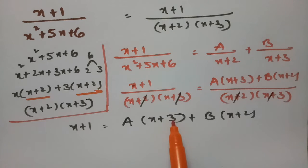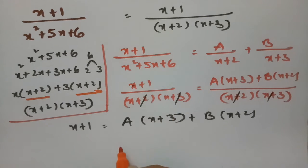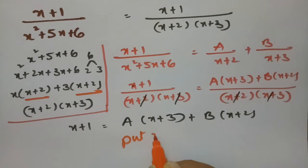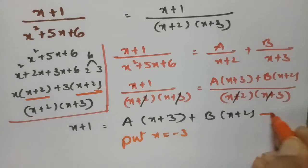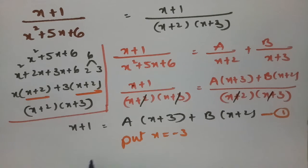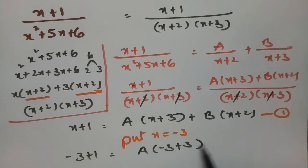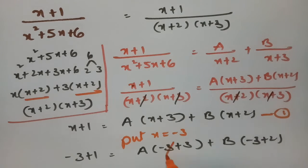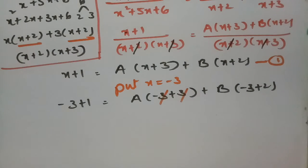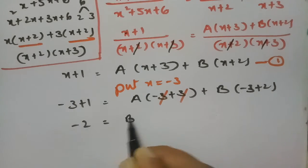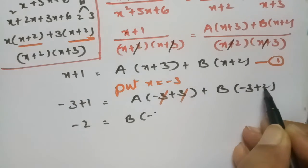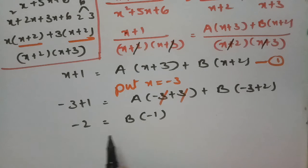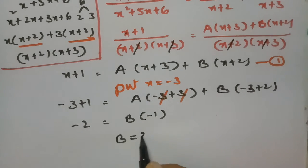To find B, I make the A term zero by putting x = -3. Substituting: -3+1 = A(-3+3) + B(-3+2), which gives -2 = B(-1). Cancelling the minus signs on both sides, B = 2.